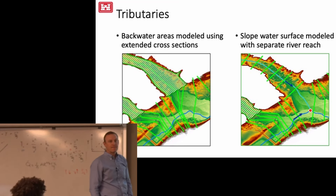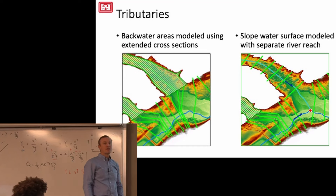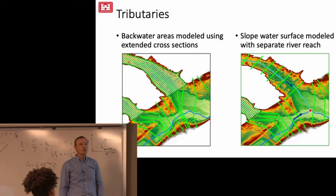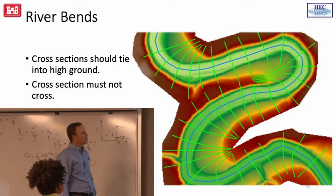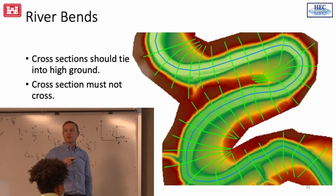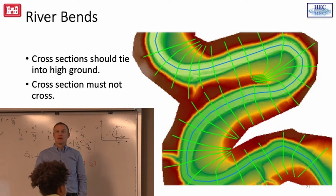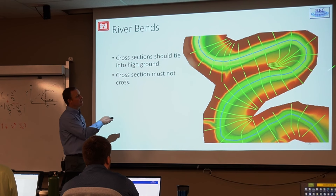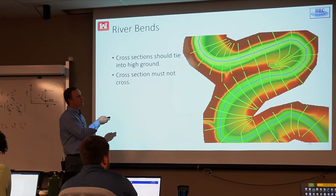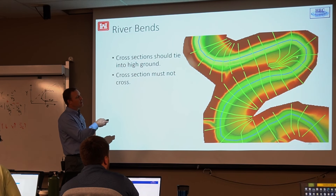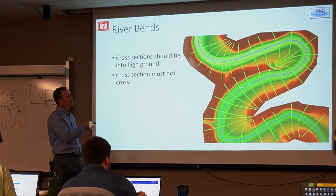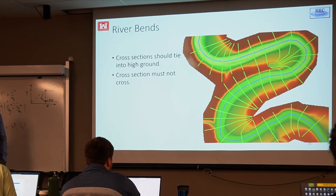For a river bend, think of it like a wheel with spokes: cross sections radiate out from the centerline like spokes from a hub, perpendicular to flow in the main channel and perpendicular to flow in the overbanks. Cross sections should never cross each other.